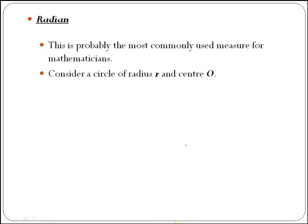What about a radian? This is probably the most commonly used measure for mathematicians, even though in physics you'll probably be using more degrees. To define what a radian is, we are going to consider a circle of radius r and center O, like this one here.